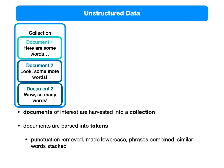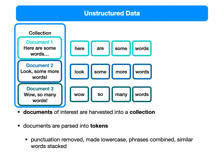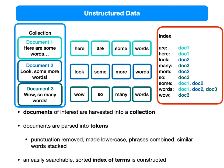The documents are parsed into tokens first — punctuation is removed, they're made lowercase, phrases are combined, similar words stacked together. These documents will be chopped up into their terms. What you then do is, for each term that exists, you make a note of which documents it appears in. This gives us our index — the index for this collection of documents. I've alphabetized them, which is quite useful. It's essentially a hash table. For example, 'are' occurs in document one, 'sum' and 'words' appear in multiple documents. That's useful.